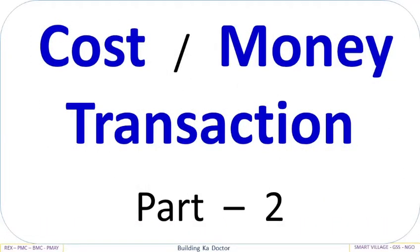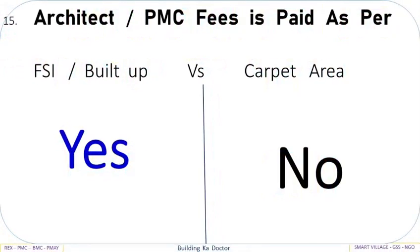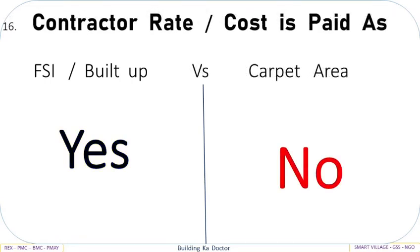Cost, Money, Transaction — Part 2. MCGM sells FSI as FSI Built-Up: Yes, vs Carpet Area: No. Architect and PMC fees are paid as per FSI Built-Up: Yes, vs Carpet Area: No. Contractor rate and cost is paid as FSI Built-Up: Yes, vs Carpet Area: No.